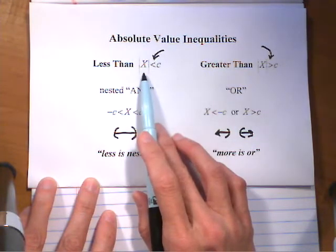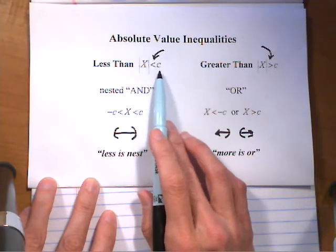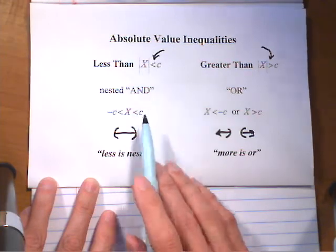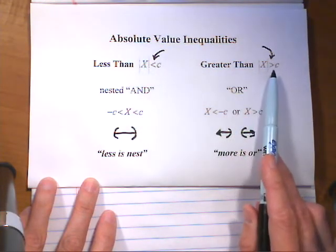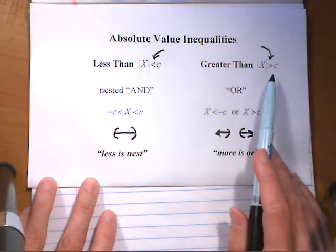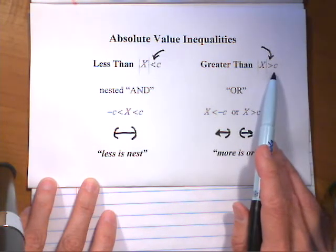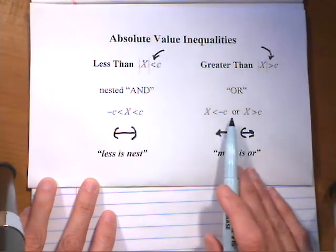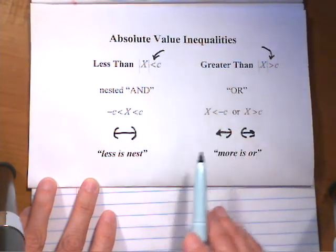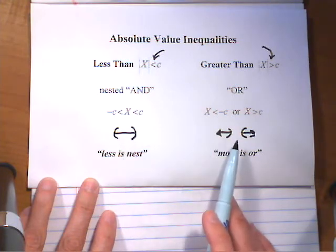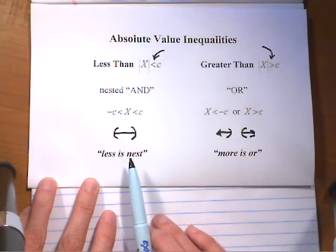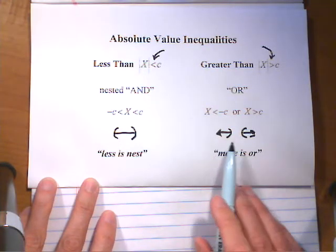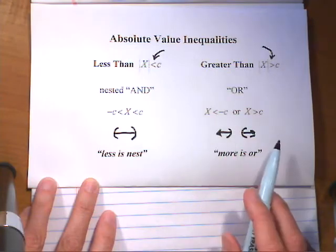If the absolute value of x is less than c, that must mean x is between negative c and c. And if it's a greater than, it must be true that x is either greater than c or less than negative c. The two cases graph out differently. When you see less, think nested and. When you see more, think or — the graph goes in two different directions.